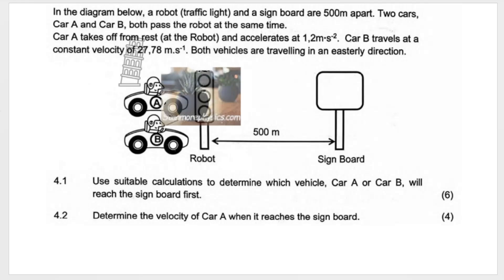In the diagram below, a robot, which is a traffic light as we know in South Africa, and a signboard are 500 meters apart. Two cars, Car A and Car B, both pass the robot at the same time.